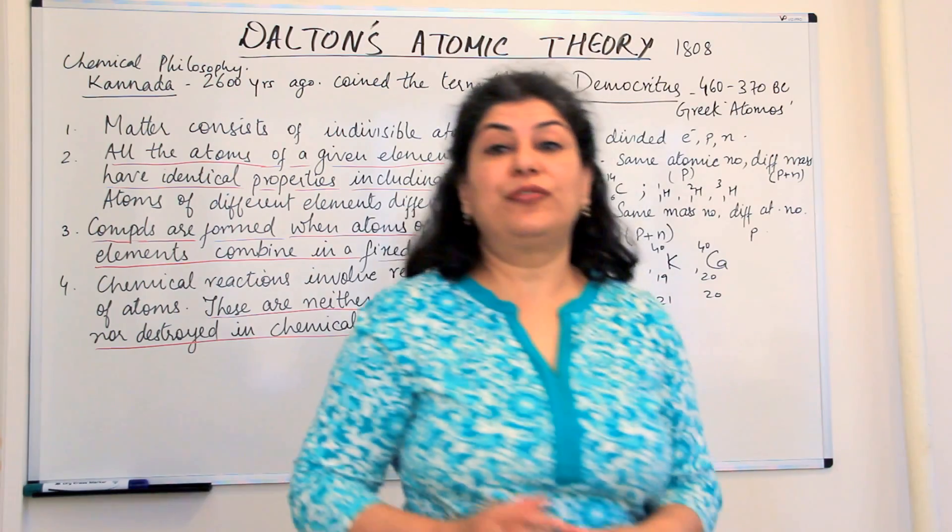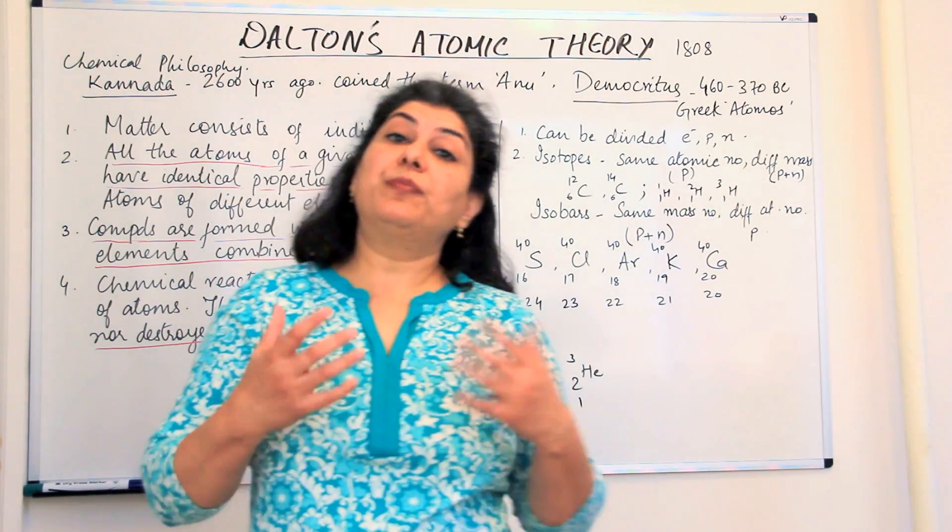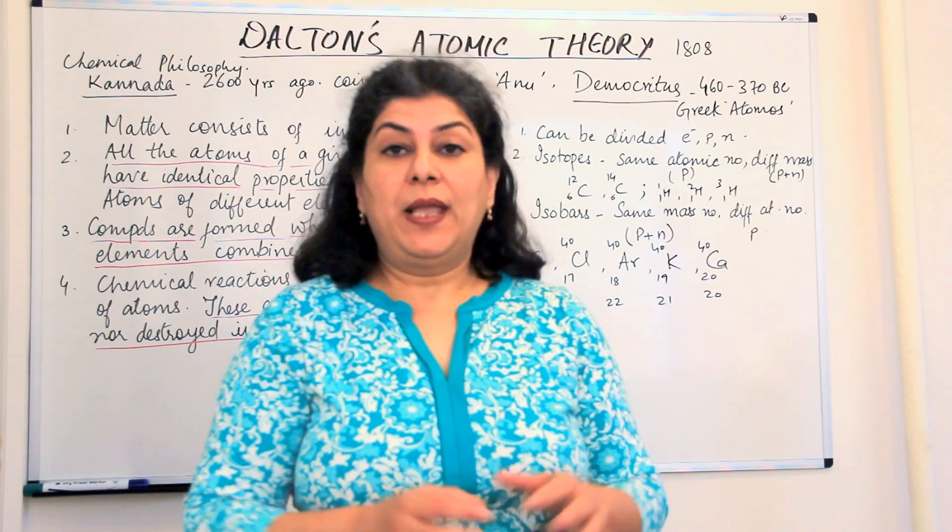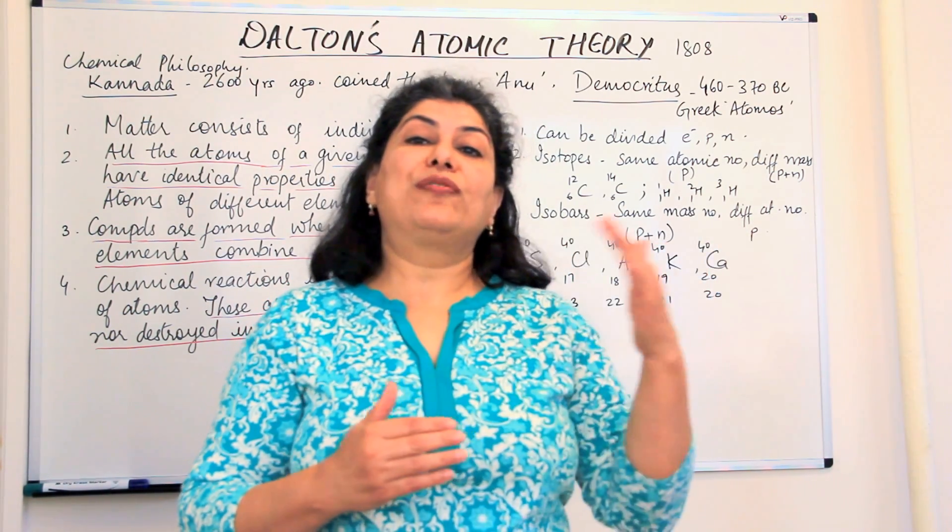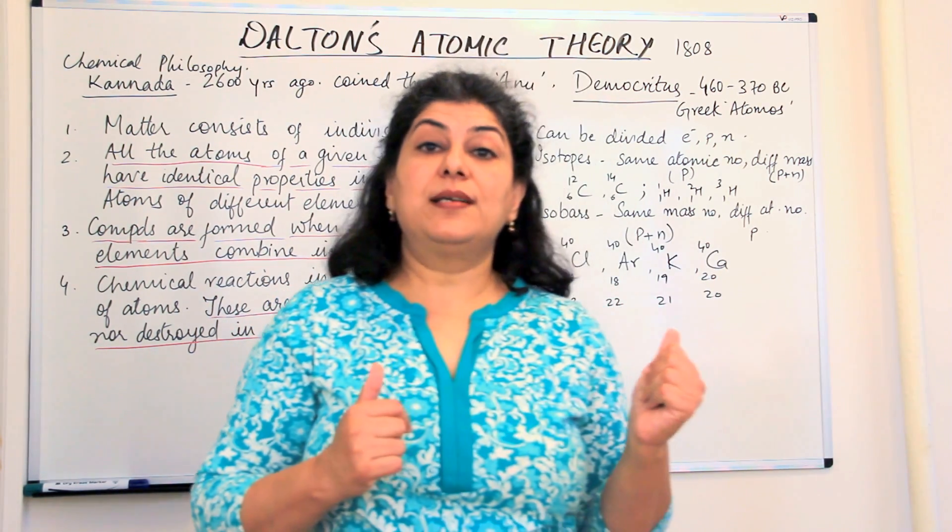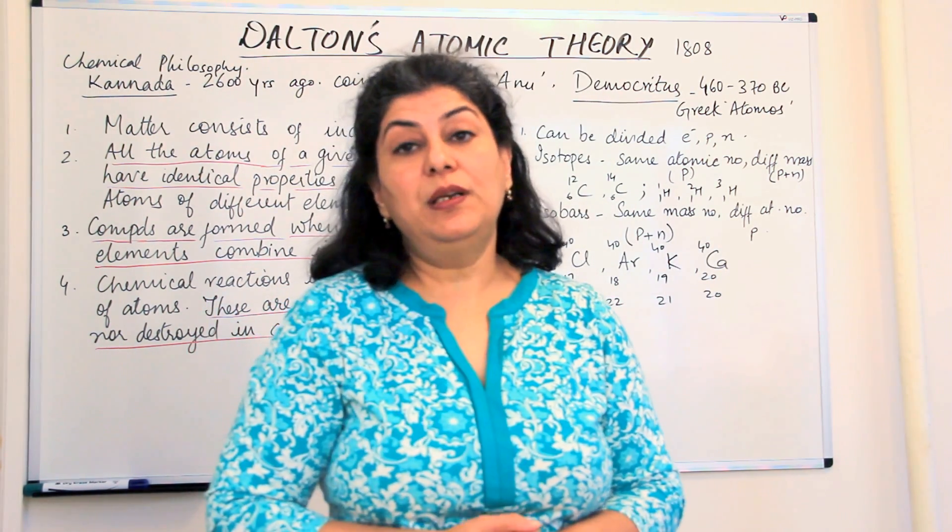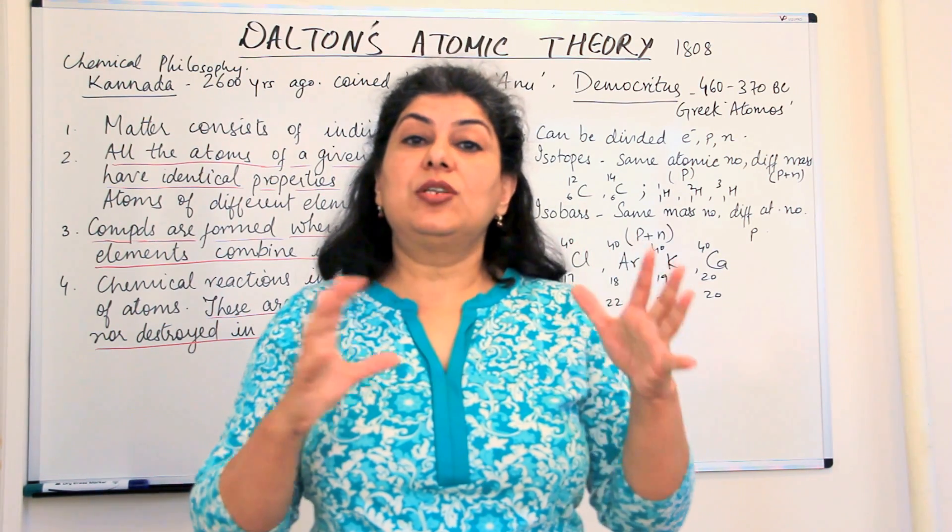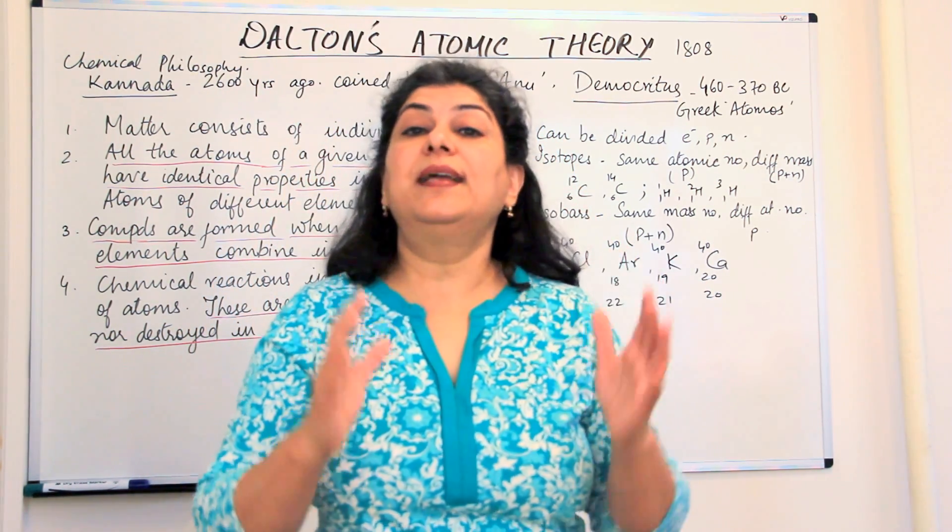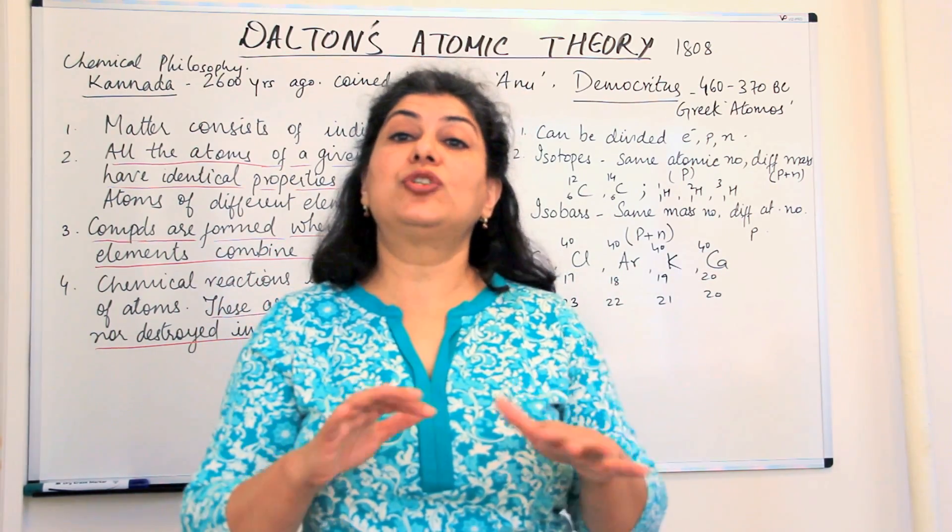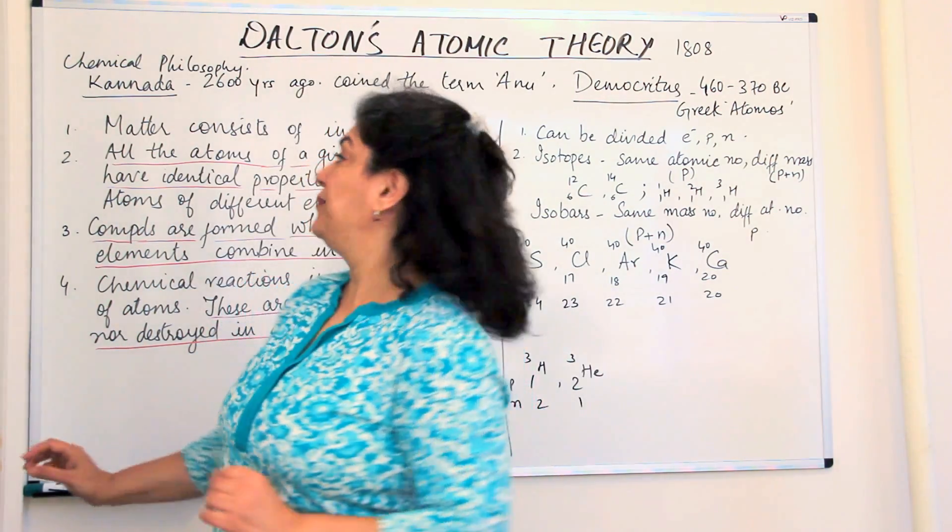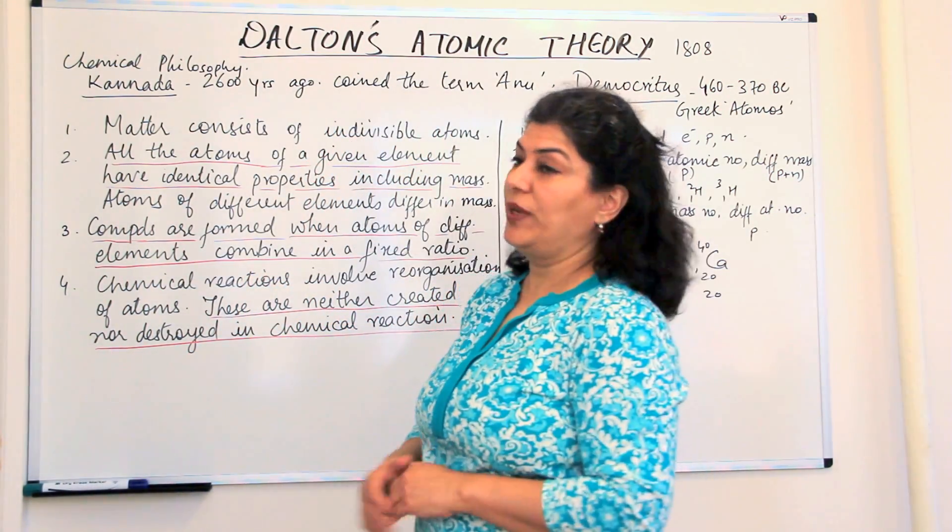Now after the laws of chemical combination were proposed, Dalton gave the law of multiple proportions and we know the other laws were the law of constant composition, the law of conservation of mass, and the law of multiple proportions. All these laws, Dalton thought about them and then he proposed, on the basis of those and on the concept of atom, he gave his atomic theory.